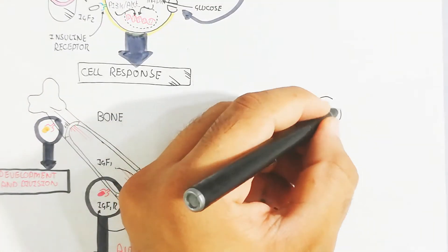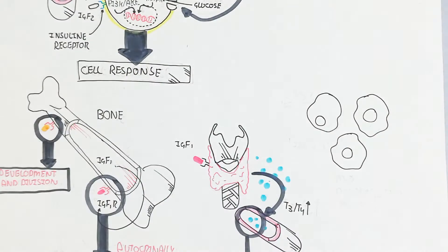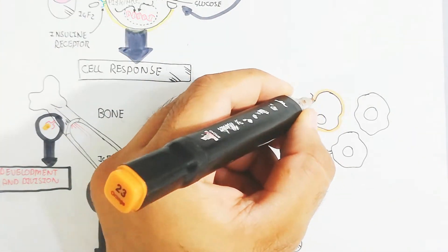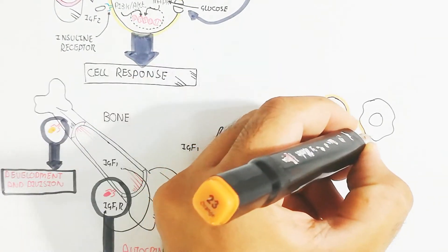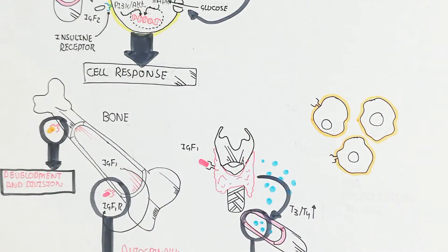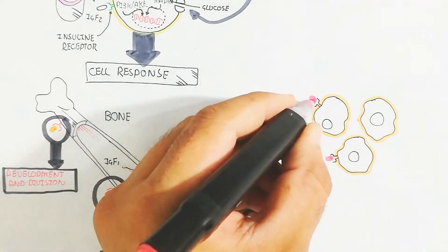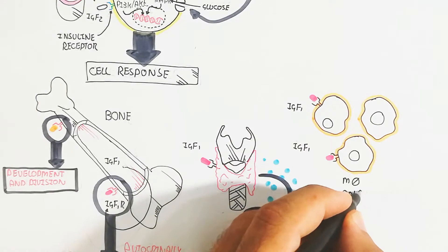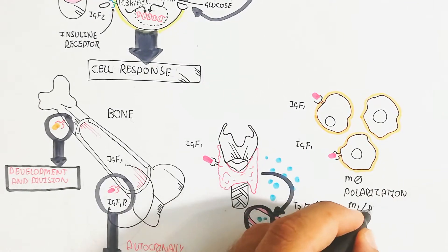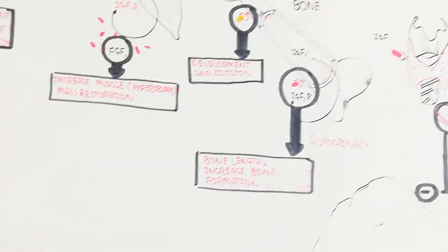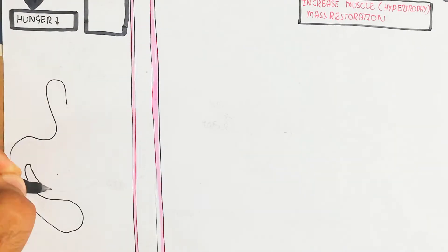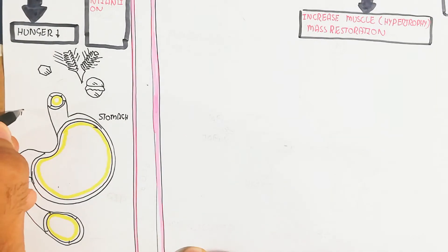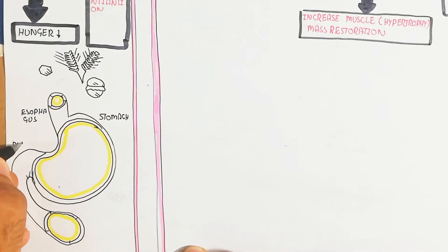Regarding macrophage polarization: IGF-1 binds with monocytes and promotes their proliferation and differentiation into macrophage M1 and M2. This represents immune cell function and development due to insulin-like growth factor 1.